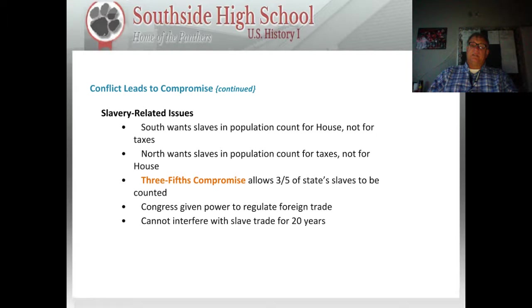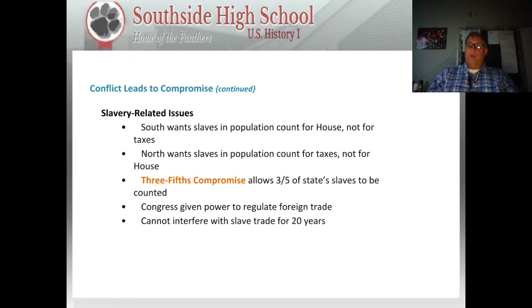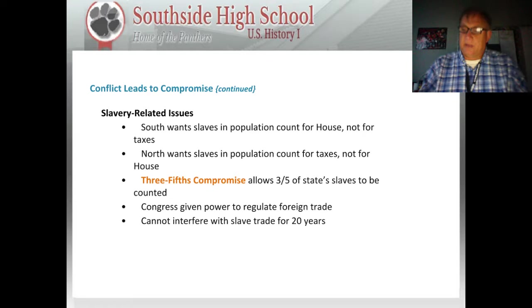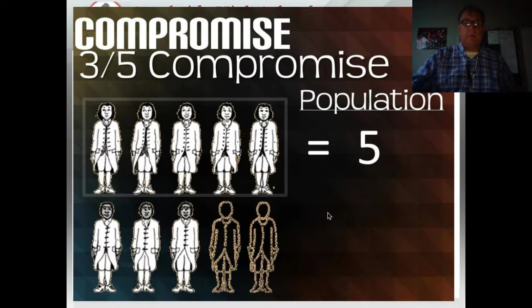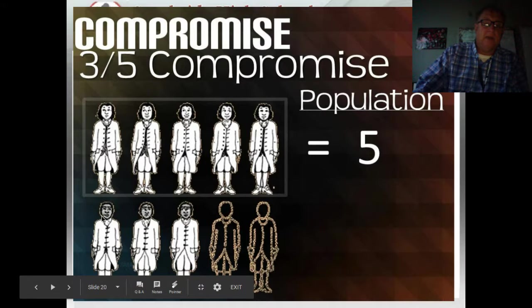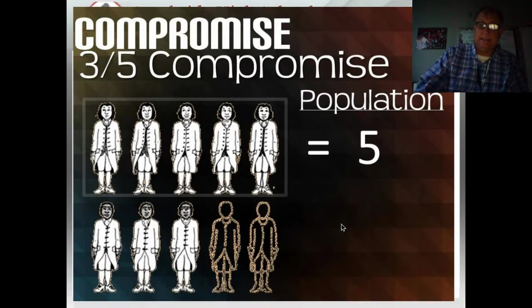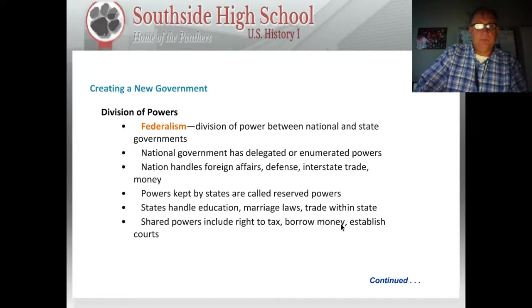The Three-Fifths Compromise was agreed upon, which allowed three-fifths of a state's slaves to be counted. Sometimes commercials and other media claim that during this time period African Americans were considered worth only three-fifths of a person — that's not accurate. This had nothing to do with a person's worth; it was simply whether or not they should be used in tallying population in the census for the House of Representatives. Congress was also given more power to regulate foreign trade and could not interfere with the slave trade for 20 years. Here's a diagram of how the Three-Fifths Compromise worked: white residents each count completely, while for every five enslaved people, only three are counted in the census.